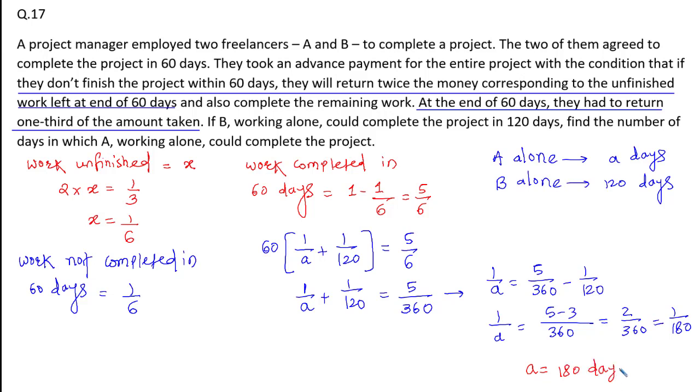So if A works alone, A can complete the work in 180 days. This is how we can solve this question.